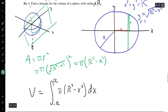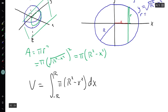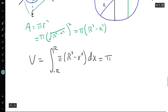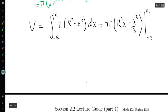Cool. So I have this integral, and this is something that I can actually do. I know that pi is a constant, so it sticks around when finding an antiderivative. The antiderivative of R squared is R squared times x. The antiderivative of x squared is x cubed over 3, and I'm going to evaluate from x equals minus R to x equals plus R.